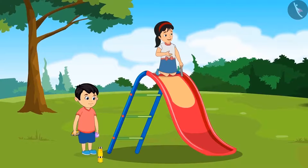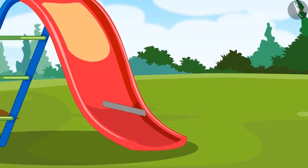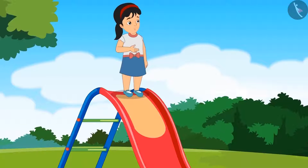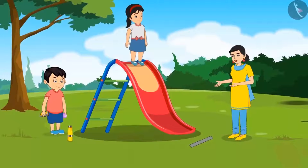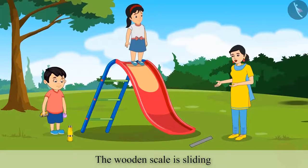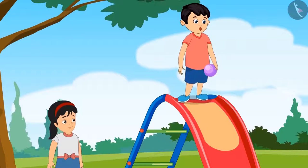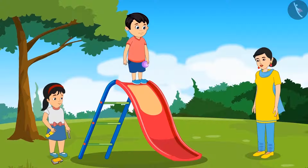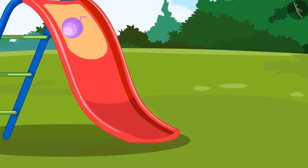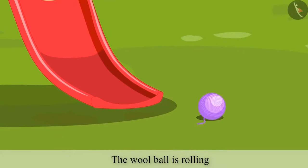Pinky pushes the wooden scale and it slid down. The mother confirms the wooden scale slid down. Chotu then asks to try the ball of wool. The mother says yes. Chotu pushes it and observes that the ball of wool rolled and came down.